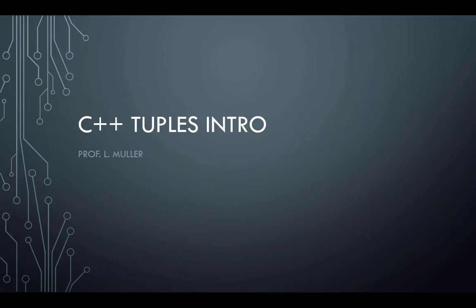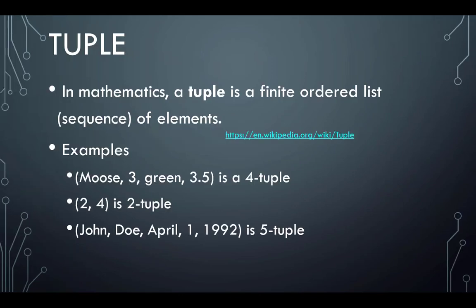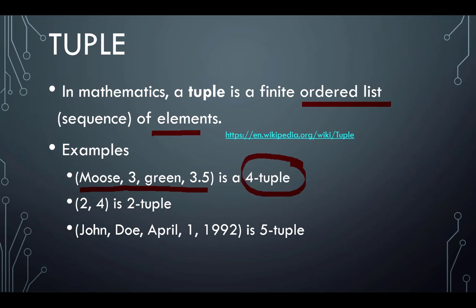What we're going to be looking at is tuples in C++ to support some of the work we've been doing in class. In mathematics, a tuple is just a bunch of values — it could be anything: moose, the number three, green, 3.5. There are four items, so you call it a four-tuple. Two items is a two-tuple. John Doe, April 1st, 1990 — looks like somebody's name and date of birth — five items makes a five-tuple.